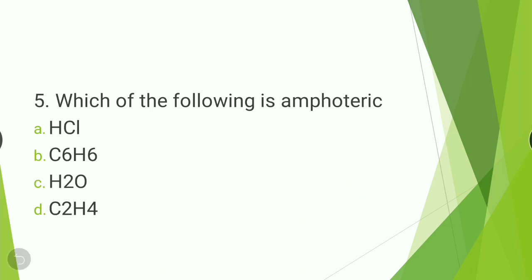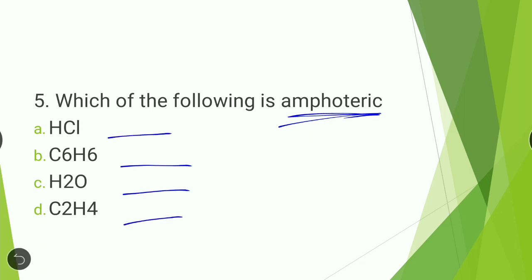Next question: which of the following is amphoteric in nature — HCl, C6H6, H2O, or C2H4? The answer is H2O. H2O is amphoteric in nature.